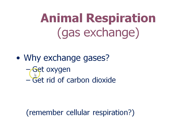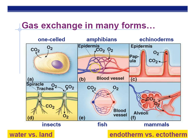Animal respiration — gas exchange. We need to get oxygen for cellular respiration and get rid of carbon dioxide, a waste product. One-celled organisms rely on simple diffusion. Amphibians can breathe through their skin, but as a result they have very thin skin with little protection. Oxygen only dissolves in water, so the skin must stay moist — if the frog dries out, it can't breathe through its skin, which is life-threatening. That's why frogs and newts can live underwater without seeming to breathe.